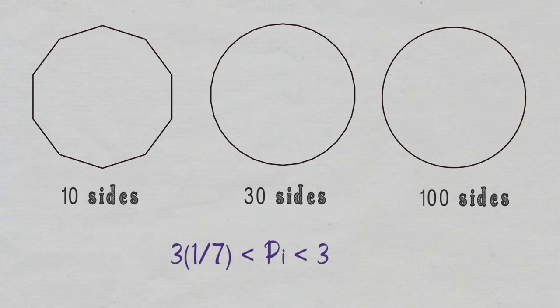Ludolph van Ceulen used Archimedes' method and extended it to working with a polygon which had 2 to the power of 62 sides. The shape really seemed to be a circle. This produced a 35-digit approximation of pi and took 25 years of calculation, which were done by hand without any calculators.